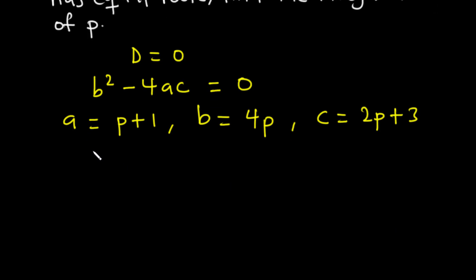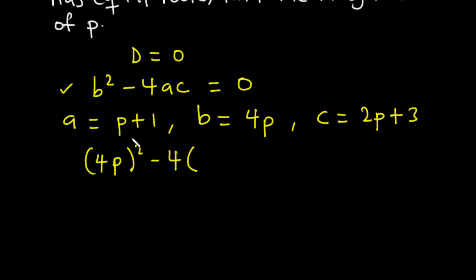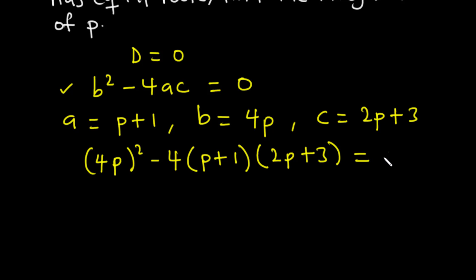Now let's insert the values of a, b, and c into this equation. We have b² - 4ac = 0. B is 4p, so we have (4p)² minus 4 times a, which is (p+1), times c, which is (2p+3), equals 0. So 4p squared gives us 16p².